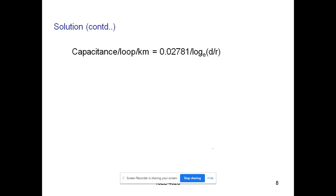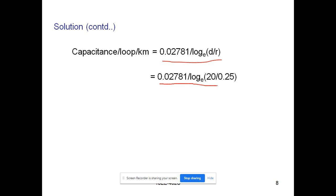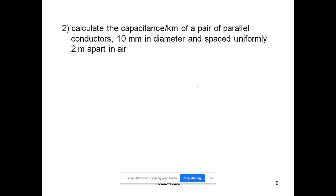We need to find the capacitance per loop per kilometer using the formula: C = 0.02781 / log_e(d/r), where d is the distance between conductors and r is the radius. Substituting the values: 0.02781 / log_e(20/0.25), which gives 0.006342 microfarads per kilometer.